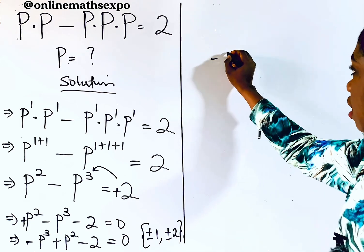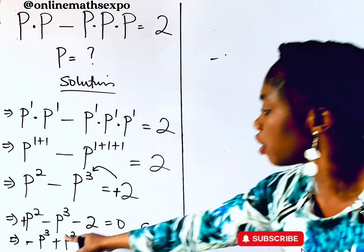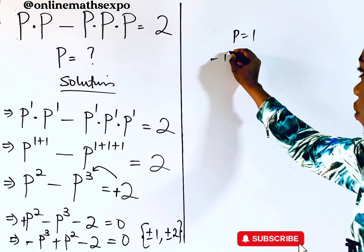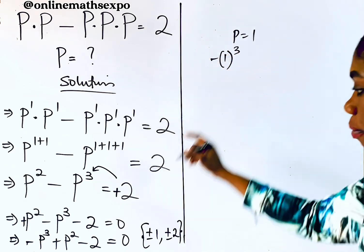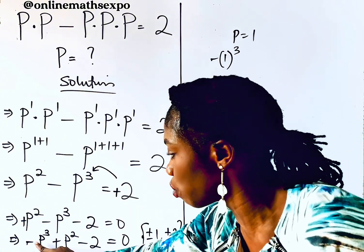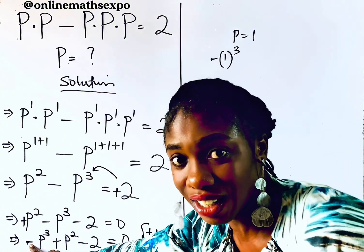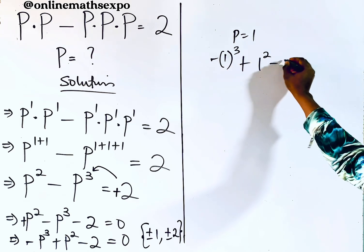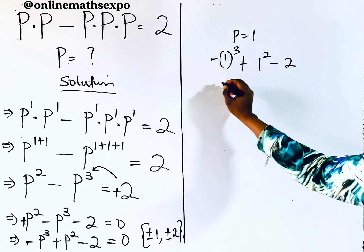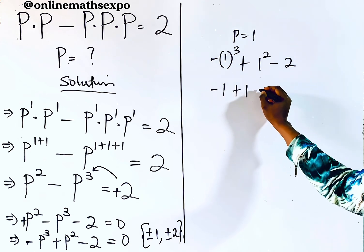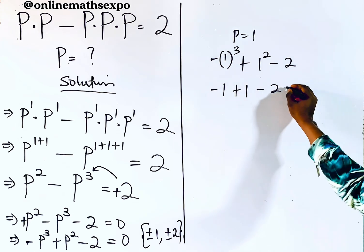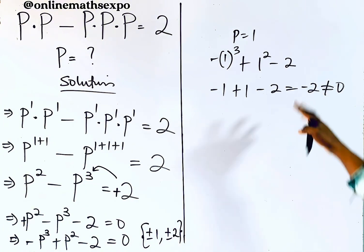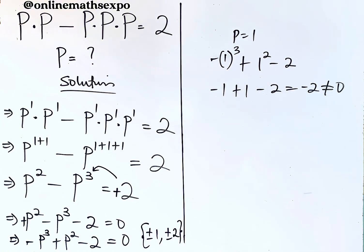Let's check p equals positive one. We substitute into −p³ + p² − 2: that gives −(1)³ + (1)² − 2 = −1 + 1 − 2 = −2, which is not equal to zero. So p = 1 is not a solution.